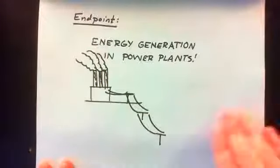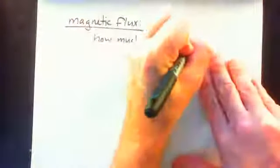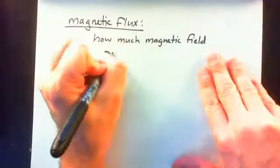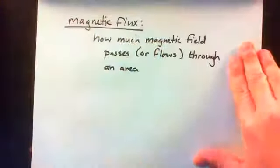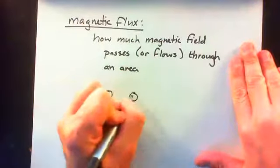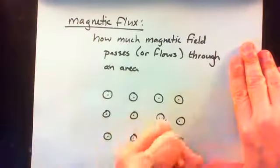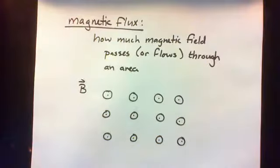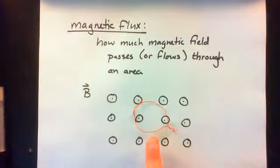Magnetic flux — the way you can think about it is it's a measure of how much field passes through an area. That's kind of a wibbly-wobbly definition, but that's one way to think about it. So I'm going to draw a magnetic field coming out of the page. And we're going to think about the magnetic flux through a loop — the area bounded by a loop.